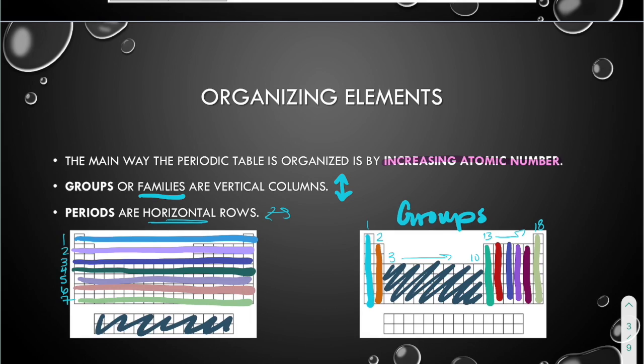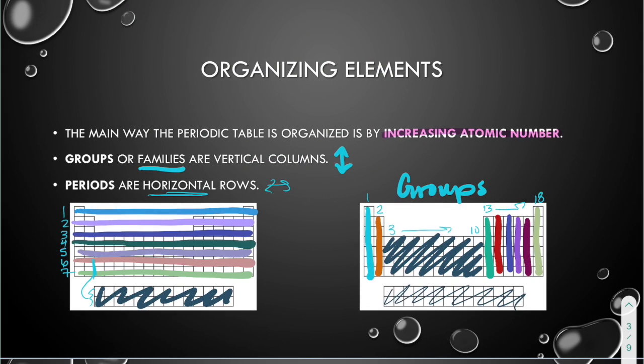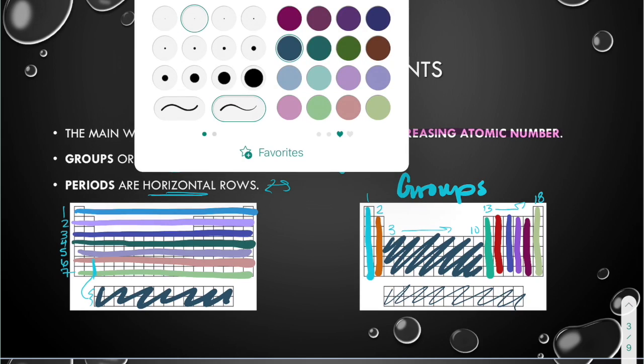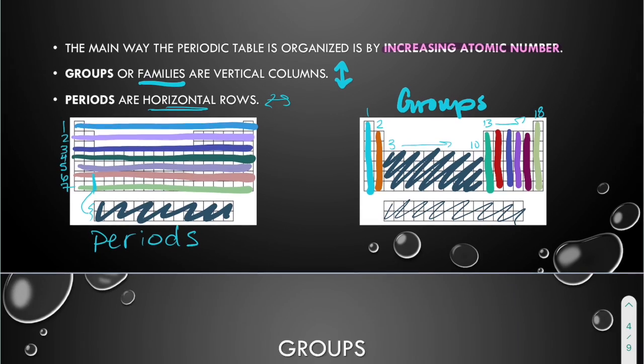The reason we kind of ignore the bottom two is because they fit into these last two rows. They're just, if we were to put them in there, the periodic table would be very wide. So it's easier for them to just come down here to the bottom. So they are included in six and seven, but we just put them along the bottom so that the periodic table is not too big. And they're also not included in the group number. So we also kind of ignore them on that side as well. These were the periods.